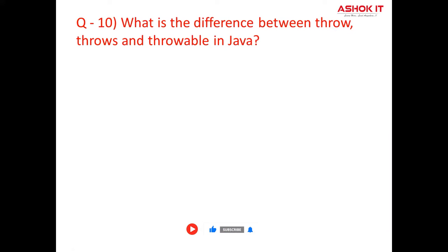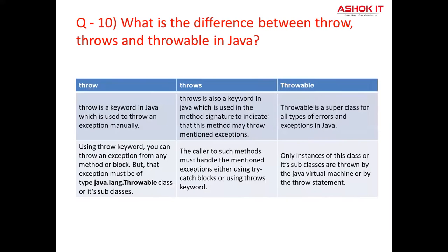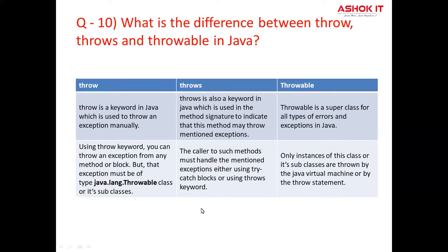Question number ten: What is the difference between throw, throws, and throwable? Throw is a keyword in Java which is used to throw an exception manually. Throws is a keyword used in the method signature to indicate that this method may throw the mentioned exception. Throwable is a superclass for all exception classes — it is the base class in that hierarchy. When using the throw keyword, you can throw an exception from any method or block, but that exception must be of type java.lang.Throwable or its subclass. The caller of a method using throws must handle the mentioned exception either using a try-catch block or using the throws keyword. Only instances of the Throwable class or its subclasses are thrown by the Java runtime.